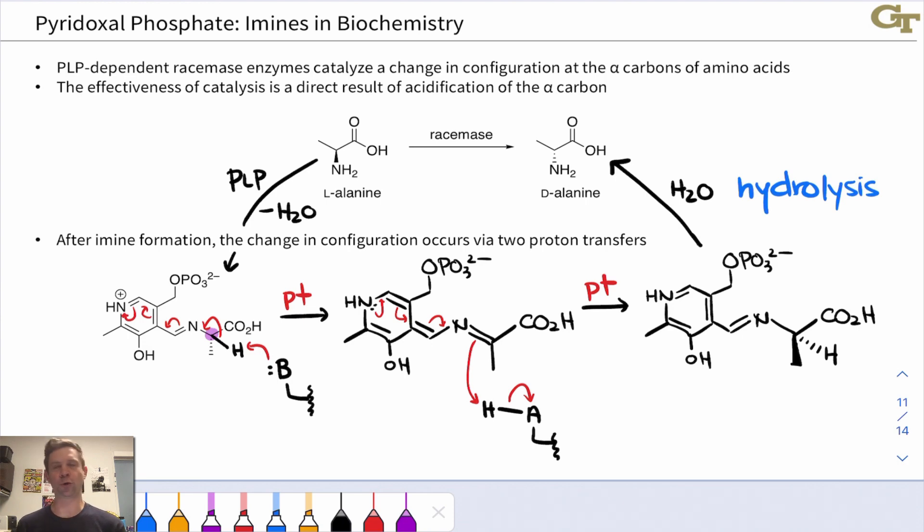This slide shows that idea in all of its gory detail, and I'm going to go through it pretty quickly, but I encourage you to pause and carefully walk through the chemistry on your own if that's of interest to you. PLP-dependent racemases—this one for example converts L-alanine into its enantiomer D-alanine—and it does this by deprotonating at this carbon. But that carbon's not that acidic on its own. This is a carbonyl alpha carbon, but it's alpha to a carboxylic acid and an NH2 group, so it's not terribly acidic. But as soon as we form that PLP imine, well now it's much, much more acidic and it can be deprotonated by a basic residue in the enzyme's active site.